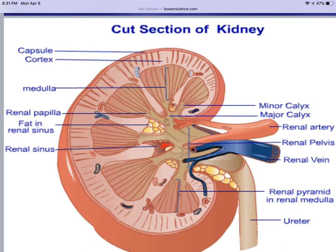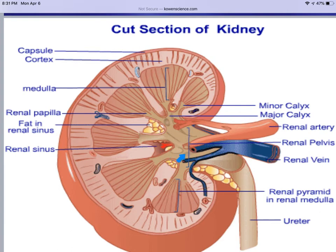Looking at a cross-section of the kidney: the very outer thin layer that covers the kidney is the renal capsule. The renal cortex is the next area. From there inward is the renal medulla. The triangular structures are the renal pyramids. The tip of the renal pyramid is the renal papilla. In between the renal pyramids are the renal columns.